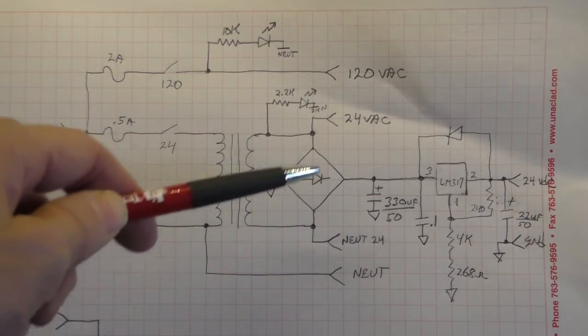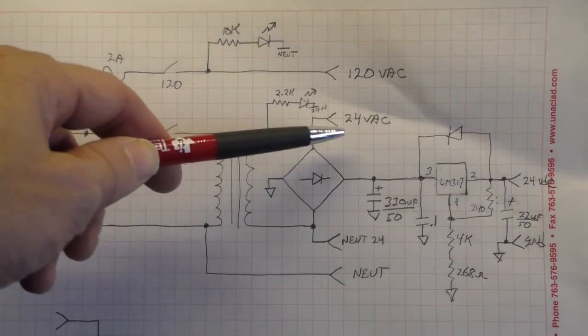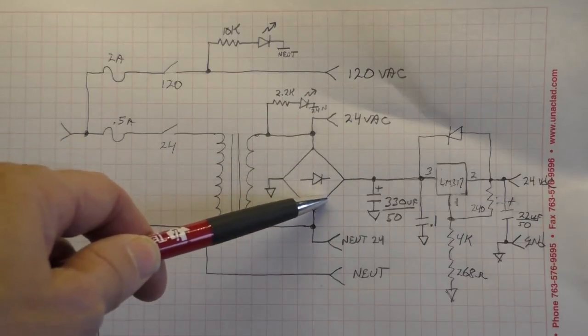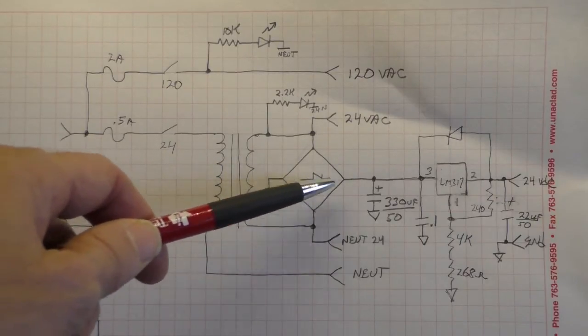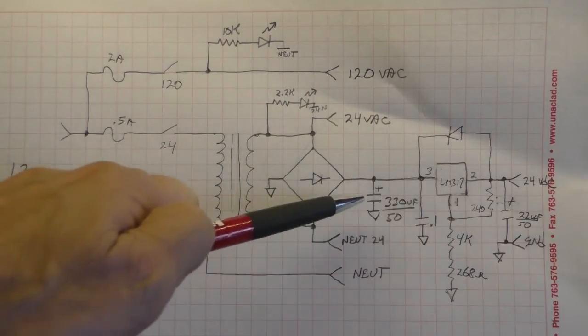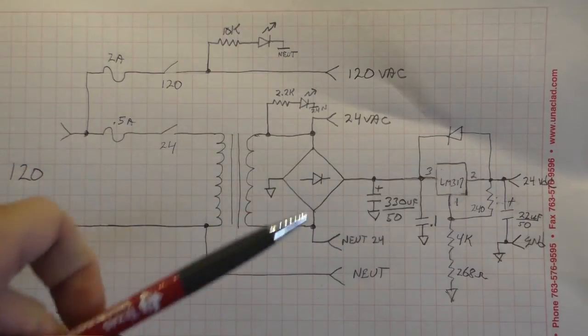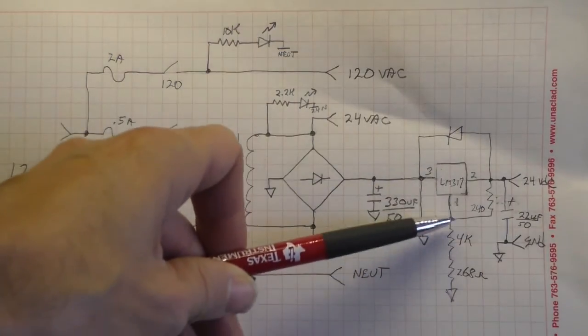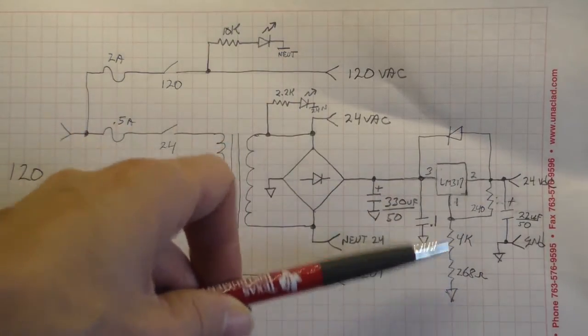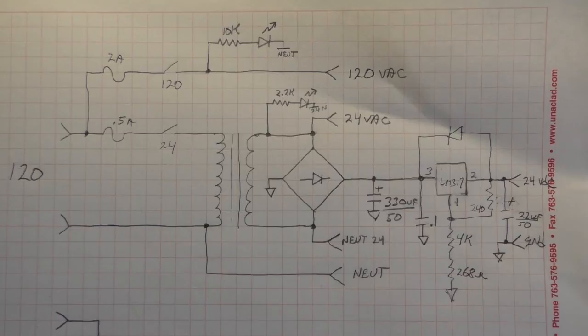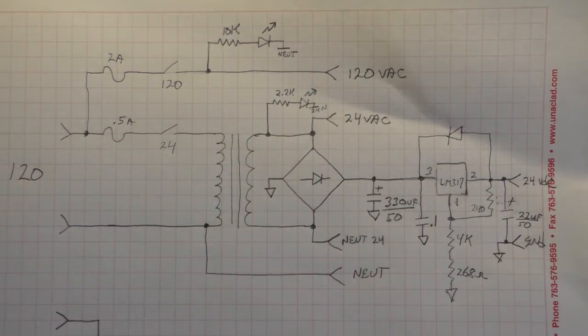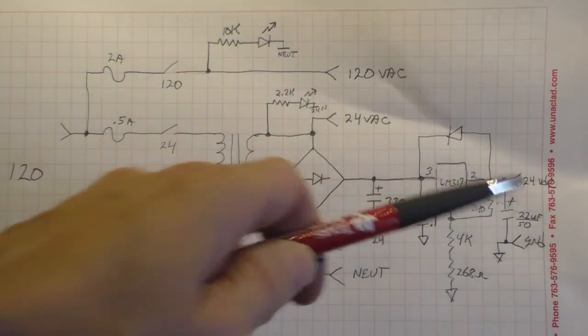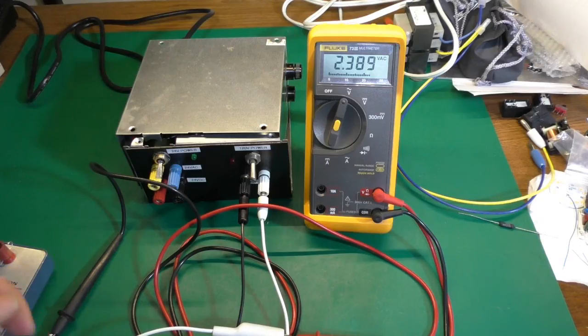There is another LED indicator that tells you 24 volts is present. There is the 24 volts AC. It goes through the diode rectifier to the filter capacitor, into the LM317. It's adjusted between this resistor and these two resistors. And a little bit of a filtering capacitor on the output, a protection diode. And there is your 24 volts DC.